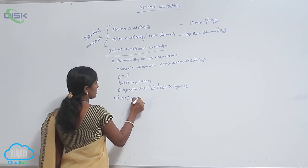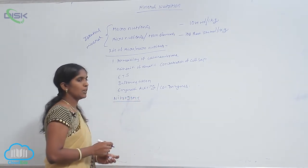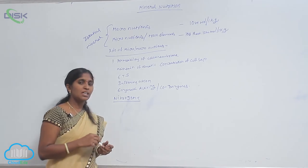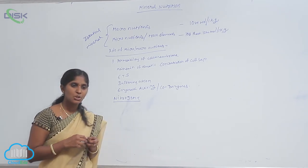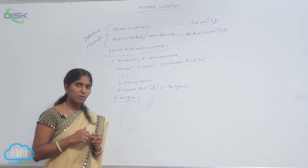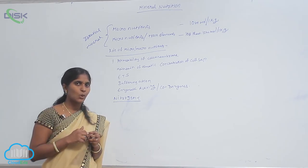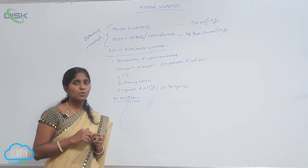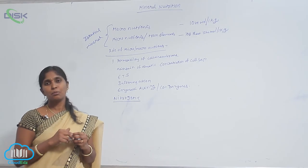Nitrogen is one of the essential minerals, an essential nutrient found in the plant body as well as in the soil. It is also found in the atmosphere.